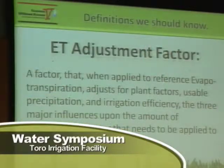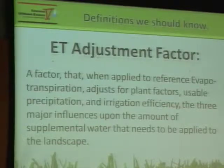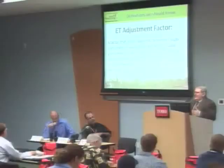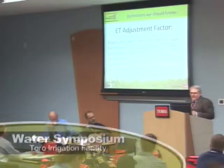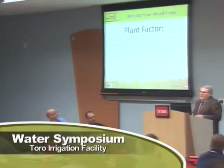We have evapotranspiration, and that's the amount of water that's used by a specific plant that's either evaporated or transpired through the plant itself. And then we have the ET adjustment factor, and this is what we're all using in order to schedule our irrigation systems. It takes the reference ET, the plant factor of the species you're trying to irrigate, and then we have to apply an irrigation efficiency factor. So you have those three things — they all sound the same but they're all a little bit different.